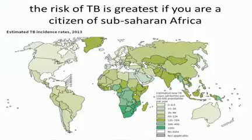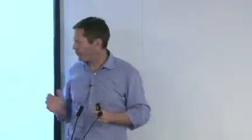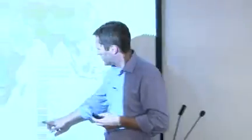When we talk about how much TB there is, we describe it in terms of the number of new cases per 100,000 people in the population each year — the incidence rate. The WHO produces a classic map of TB incidence, which tells you the likelihood of getting TB if you're a member of the population in a particular country.